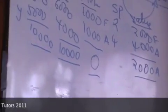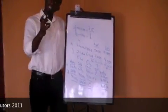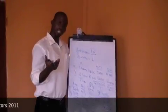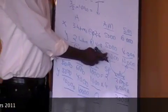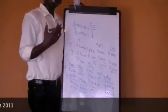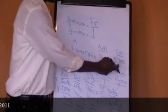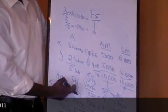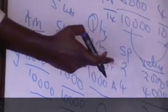This is how we calculate the mix variance. In the exam question, we are given the standard proportion, and the question gives us the actual quantity used — 5,000 liters of X and 5,000 liters of Y. Out of the total actual of 10,000, we calculate the standard mixture, which becomes 6,000 and 4,000. We then compare the actual mixture with the standard mixture to get the variance in quantity, and multiply by the standard price to get the value of the mix variance.